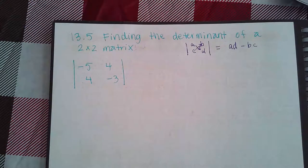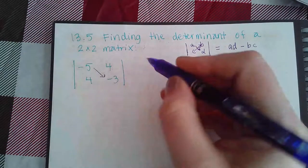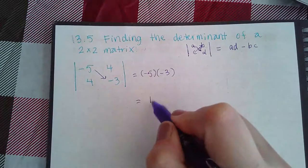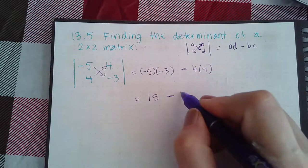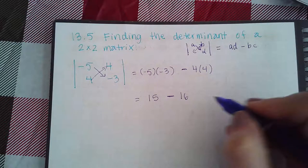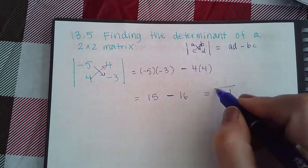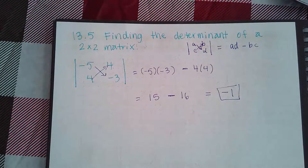So for this particular example, if I multiply these two together, I have negative 5 times negative 3 minus 16. So the determinant value here is negative 1.